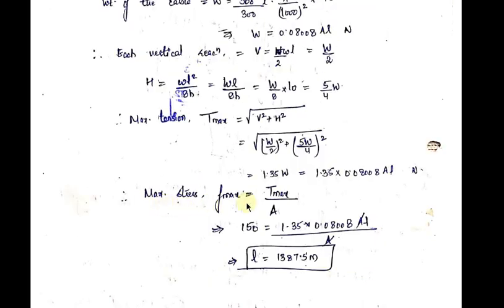The maximum permissible stress in the cable is 150 N/mm². Stress equals force divided by area, so maximum stress = T_max / A. To find maximum stress, we use T_max. Setting F_max = 150 N/mm² and substituting the expression for T_max, with area A kept as is, we can solve for the unknown span L.